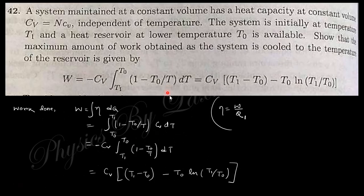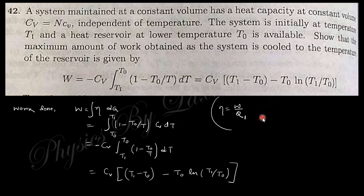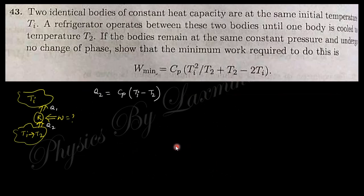The next question: a system maintained at constant volume has a heat capacity Cv independent of temperature. The system is initially at temperature T₁ and a heat reservoir at temperature T₀ is available. The maximum work done as the system is cooled by this reservoir is W = ∫η dQ, where η = 1 − T₀/T, and dQ = Cv dT. Integrating gives the answer.